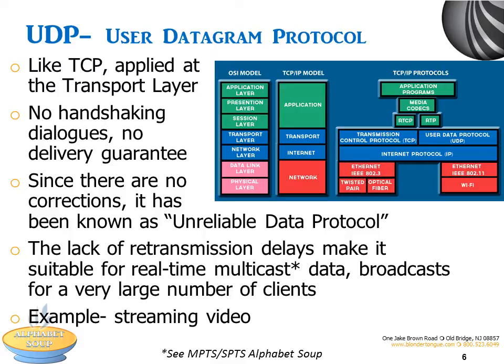UDP is more for multicasting data, such as streaming video. If packets are out of order or lost, then those packets are skipped. Because of the lost packets, streaming video may seem jumpy. We cover multicast, unicast, multiple and single program transport streams in a subsequent alphabet soup.